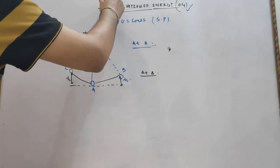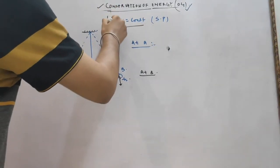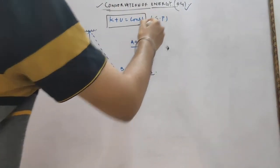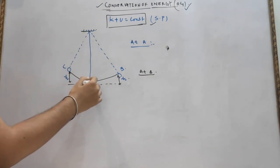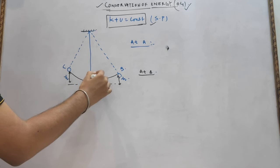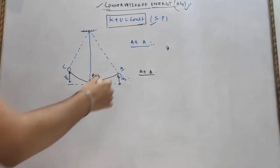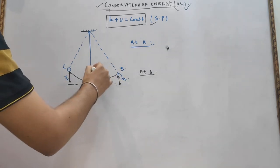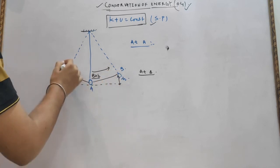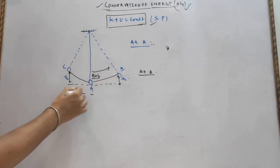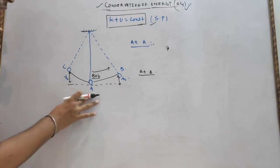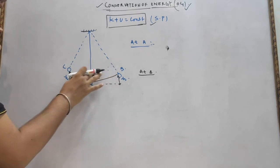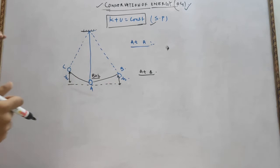Now we will cover the next topic — conservation of energy using the example of a simple pendulum. Total energy will remain constant. Suppose this is a simple pendulum with a bob at position A, which is the mean position.